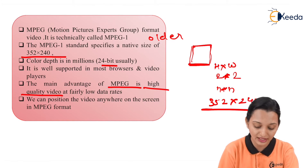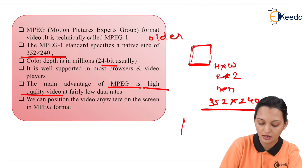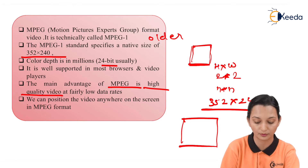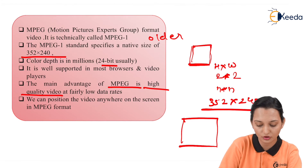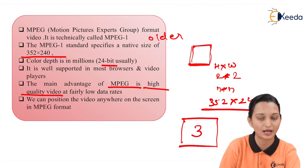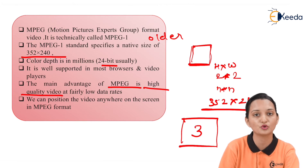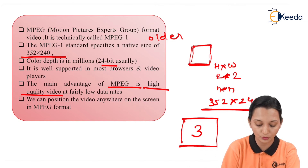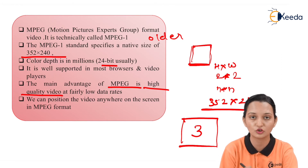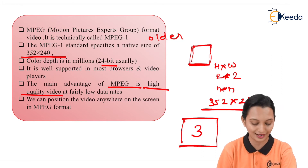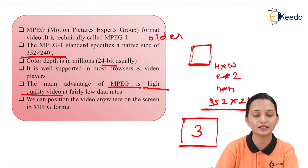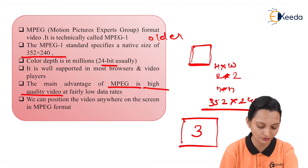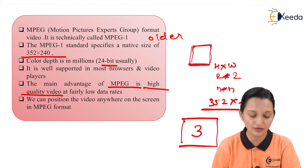We can position the video anywhere on the screen using the MPEG format. Because of how the MPEG algorithm works, we can focus on the relevant part of the image and predict only the motion portion to encode. Applying DCT and quantization on the macroblocks — the matrix or sampled format of MPEG — allows us to position the video anywhere on the screen.